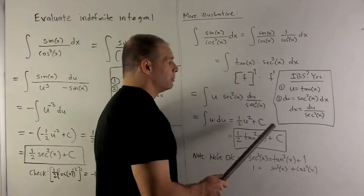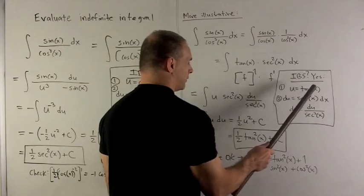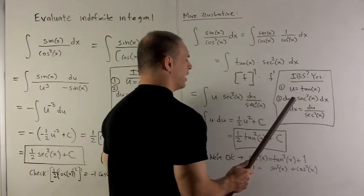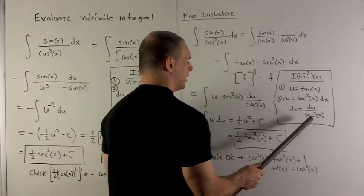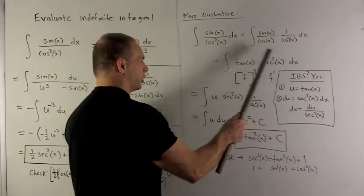By my rule, du equals the derivative of that times dx. So we wind up with derivative of tan x is secant squared x. I isolate my dx, that gives me du over secant squared. We substitute everything into the original integral here.